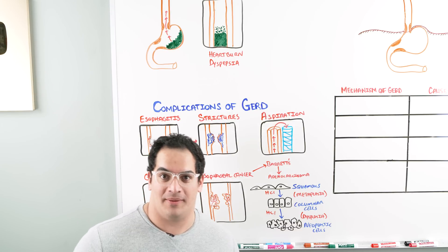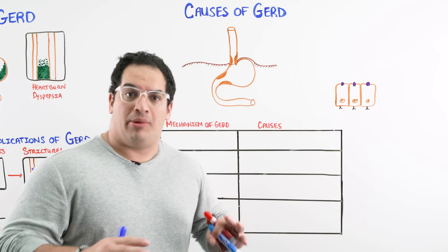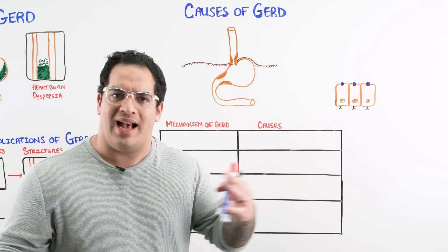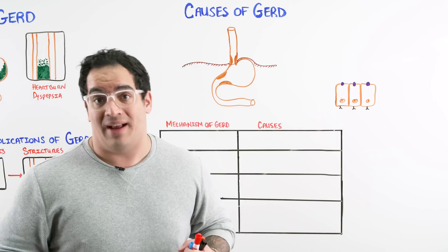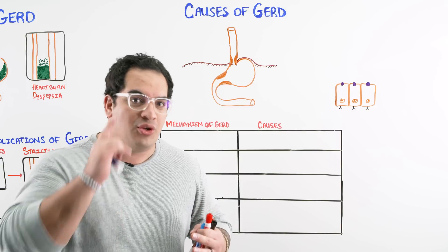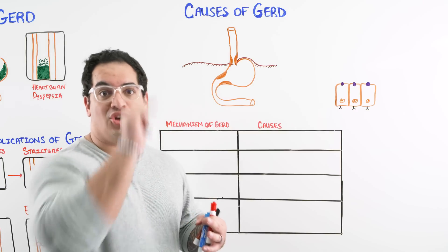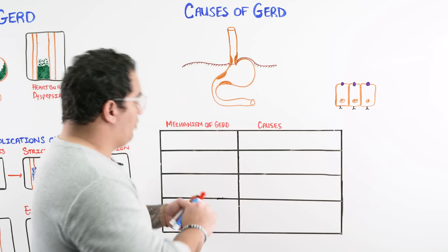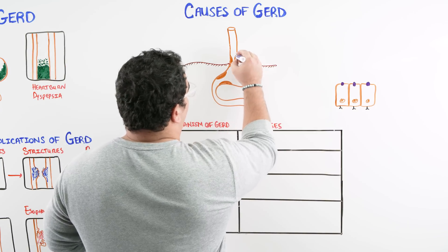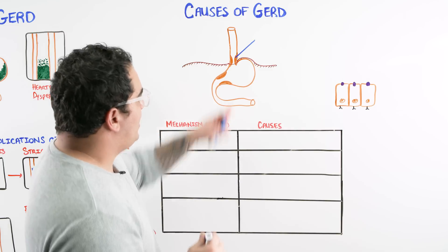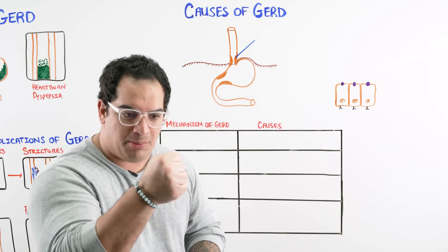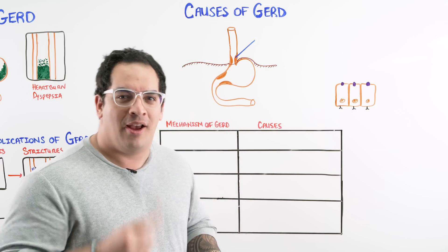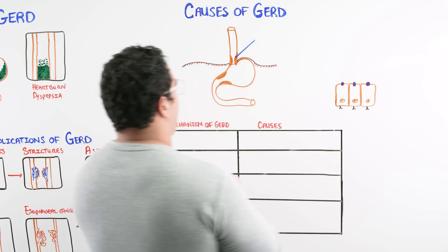Now let's talk about the different causes of GERD. We know the complications — esophagitis, strictures, aspiration, GI bleeds, and esophageal cancer. The question is: why is hydrochloric acid going up into the esophagus? There are four particular reasons. One is that the lower esophageal sphincter, which is supposed to be tight and prevent acid reflux, has a low tone.